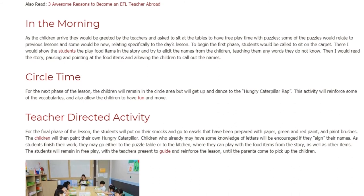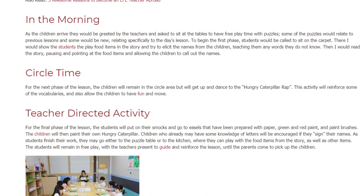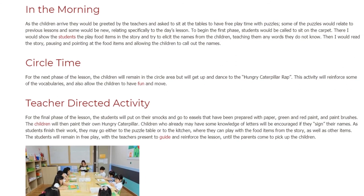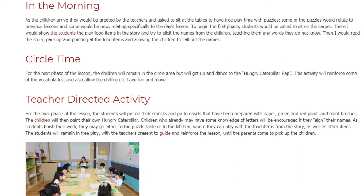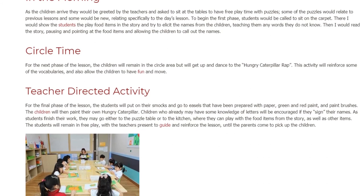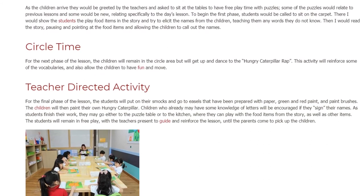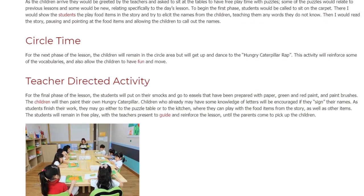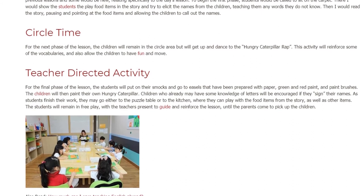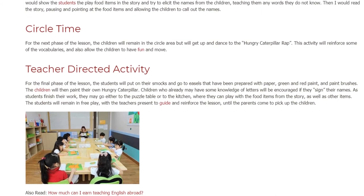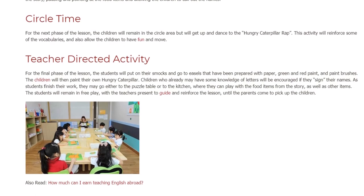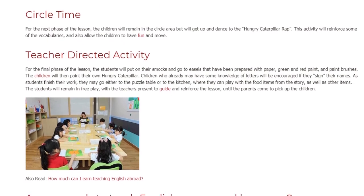For the next phase of the lesson, the children will remain in the circle area but will get up and dance to the Hungry Caterpillar rap. This activity will reinforce some of the vocabulary, and also allow the children to have fun and move. For the final phase of the lesson, the students will put on their smocks and go to easels that have been prepared with paper, green and red paint, and paint brushes. The children will then paint their own hungry caterpillar.